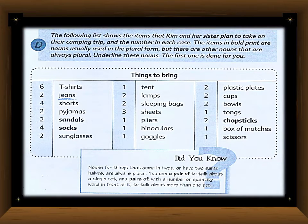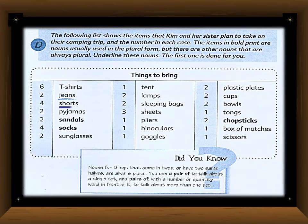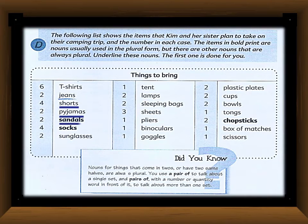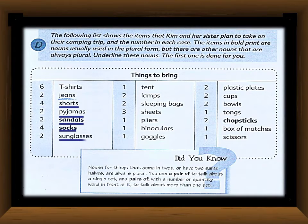After 'jeans,' the next always-plural nouns are: 'shorts' — because it has two legs; 'pajamas' — the same reason; 'sandals'; 'socks'; 'sunglasses' — because we have two eyes. The next items — 'tent,' 'lamps,' 'sleeping bags,' 'sheets' — do not need to be used as plural in the same way.